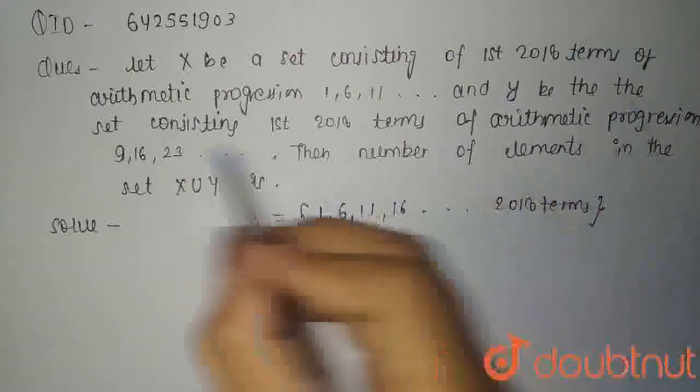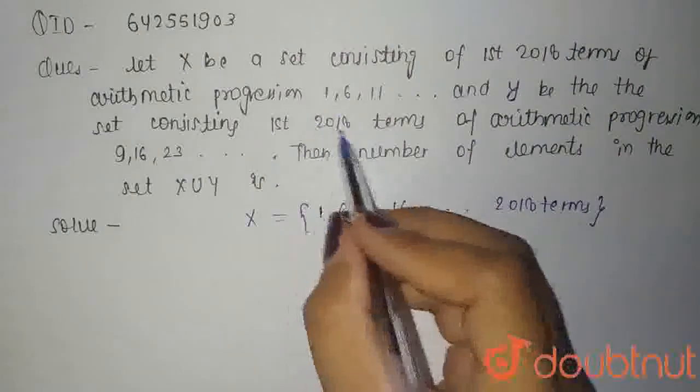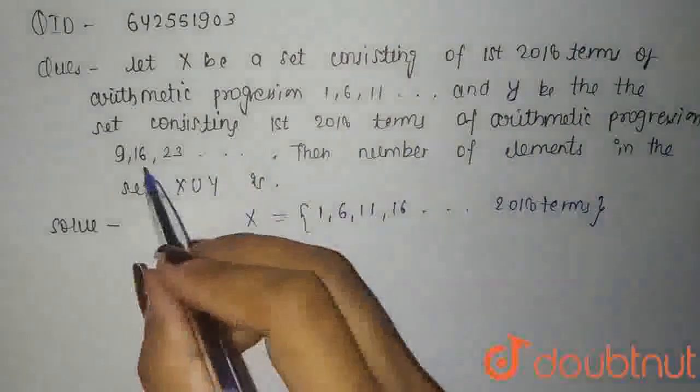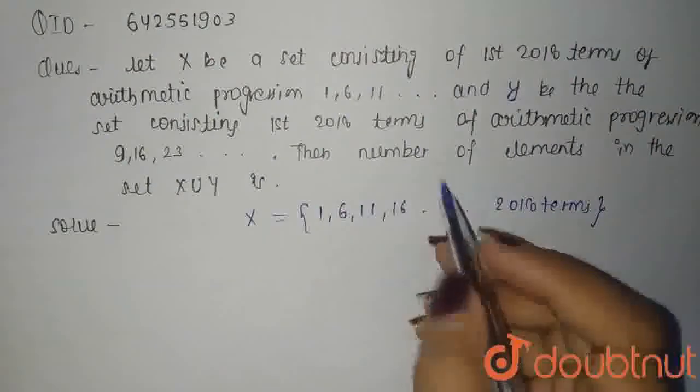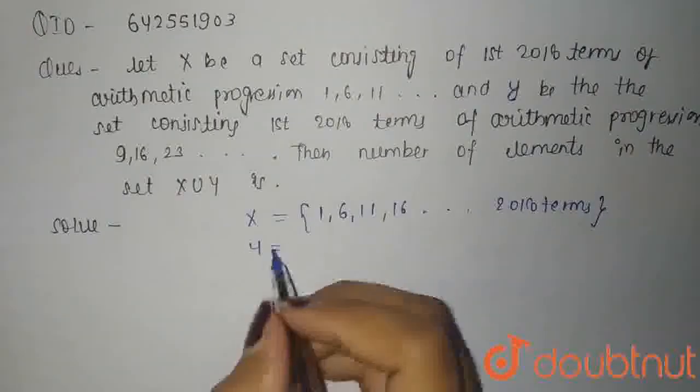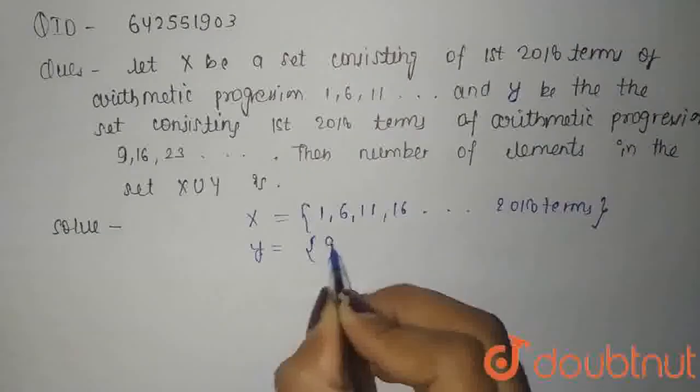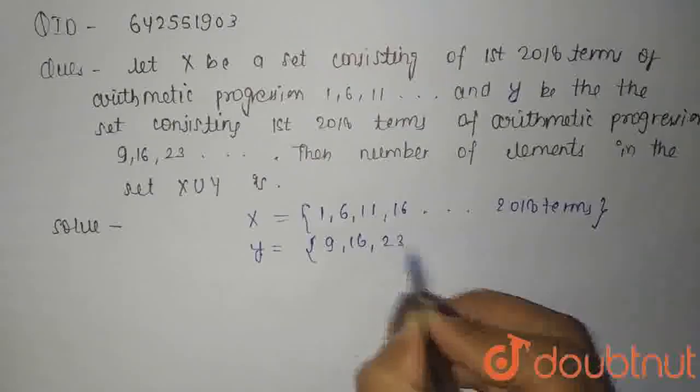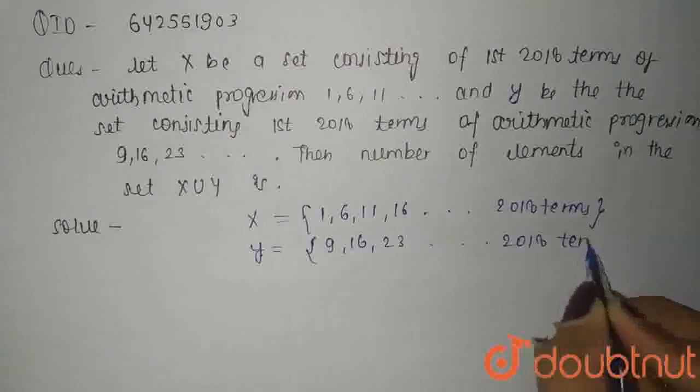And Y be the set consisting of the first 2018 terms of arithmetic progression 9, 16, 23, and so on. So Y is given as 9, 16, 23, and the first 2018 terms.